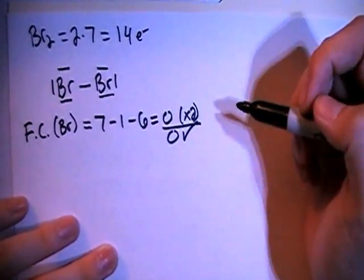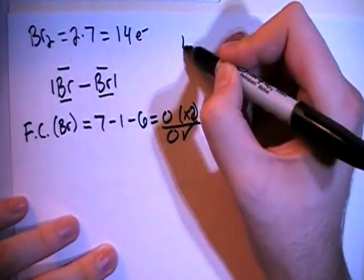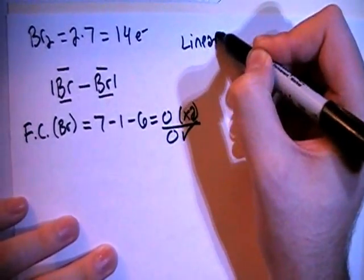In terms of shape, because there's only two atoms, that's going to make this a linear shape.